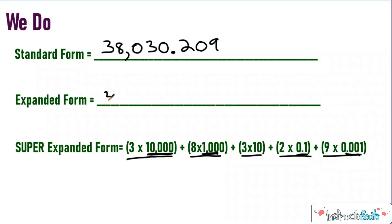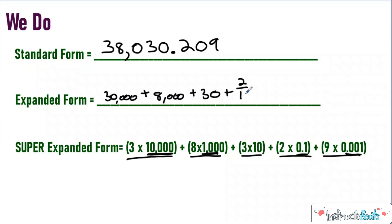If you really understood your place value lessons, this is super easy. Expanded form is even easier — if you're confused at all, you can just multiply and add them together. I have 30,000, then 8,000, then 30. I had a zero in the hundreds, so I don't need to write plus zero — it's just assumed. Then I had two-tenths, written in fraction form. You could also write it in decimal form. And then to mix it up, I'll write this one in decimal form: nine thousandths. You could also write nine one-thousandths — either way works.